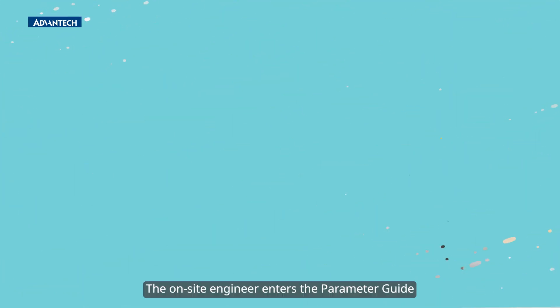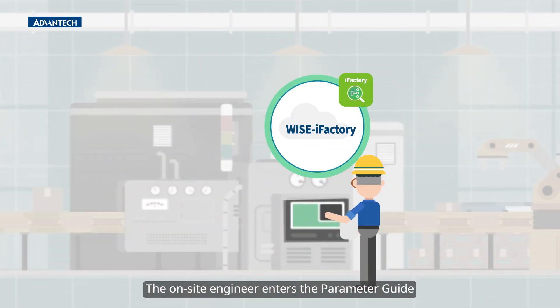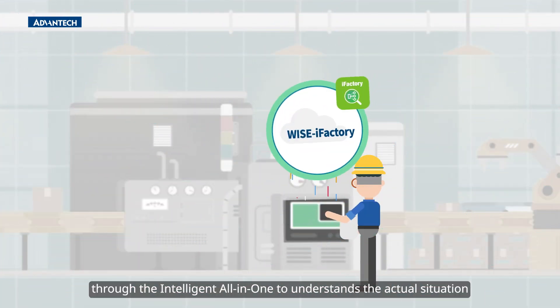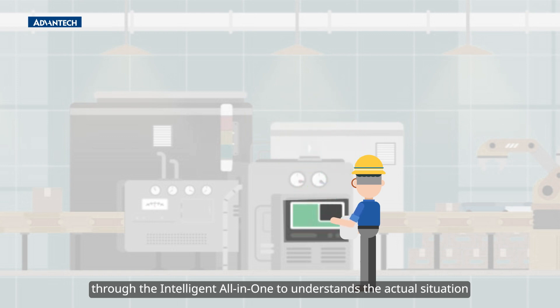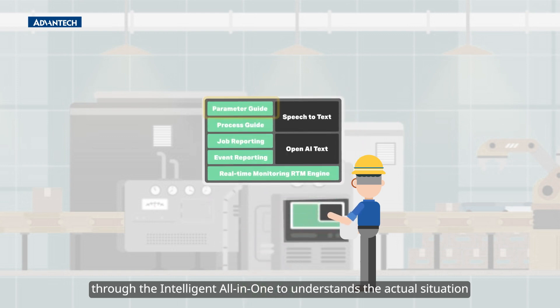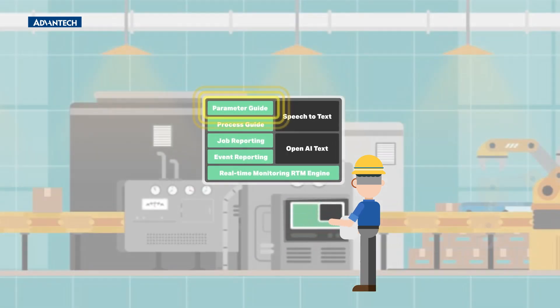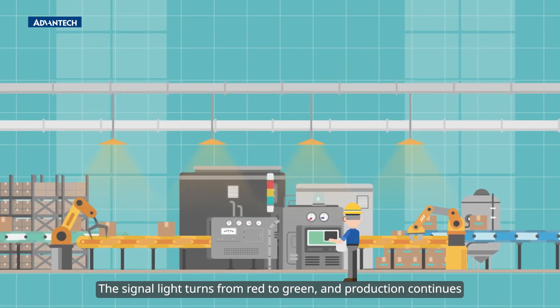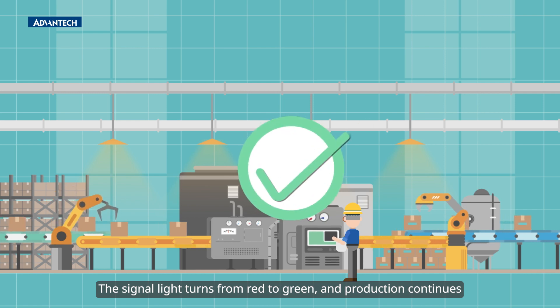The on-site engineer enters the parameter guide through the Intelligent All-in-One to understand the actual situation. The signal light turns from red to green, and production continues.